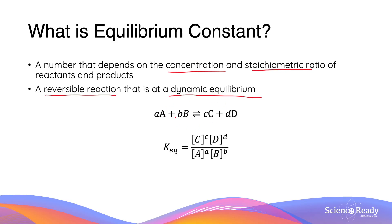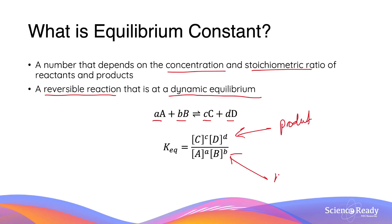For a generic reversible reaction between A, B, C, and D, the equilibrium constant is expressed in terms of the concentration of each of the four chemicals. Each concentration is raised to a power, where the number in the power is the stoichiometric coefficient in front of each chemical. The most important thing to remember is that the equilibrium constant is the product concentration divided by the reactant concentration — not the other way around.